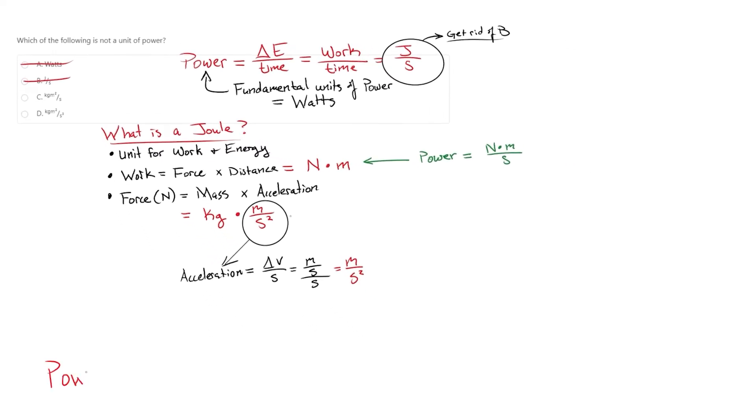Either way, our power equation, which started out as watts and was then broken into joules per second, then newton meters per second, has finally reached the end of its reductionist road in the form of kilograms times meters per second squared times meters, all divided by seconds.